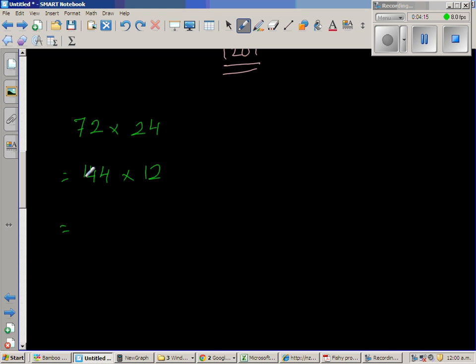So this is 100. Double of 100 is 240. Double of 44 is 80. So this is 288 times 6. So I can again double this and half this.